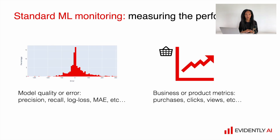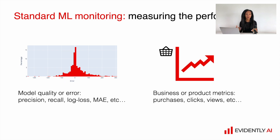When it comes to standard machine learning monitoring we always start from measuring the performance. There are quite a lot of standard performance metrics like precision, recall, log loss for classification models, or mean absolute error for regression models. And of course it's even better when you have a deep understanding of the service and the business value, so you can also add product metrics like purchases, clicks, views, and so on.